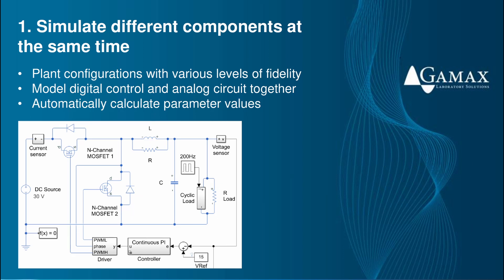Using Simulink and Simscape components, we can model and simulate different electrical components using pre-built or custom blocks. With the ability to simulate analog and digital components at the same time, we can apply optimization methods or Monte Carlo analysis to automatically calculate component parameter values and controller gains to meet timing and frequency constraints. We can vary the fidelity of our model by modeling components as average value components, ideal switching devices, or with non-linear characteristics, and we can also include the thermal characteristics.